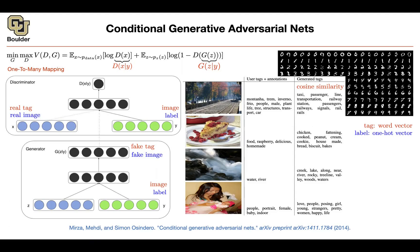Student: When you say take the real tag, do you pick one at random from that class? Instructor: The real tag is the data that you have. You know your tags and your input image — you know Montana, Tram, Inverno, etc. These are your real tags, encoded as word vectors. The fake tag comes out of your generator, which could initially be bad — like outputting 'chicken' — but gets much better over time. The discriminator has to discriminate between the two, and this becomes harder and harder as training progresses.